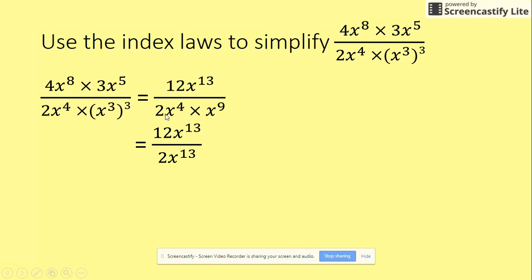We add our indices. We times our x's, so we've got 2x, 4 plus 9 gives us 13. Okay, so what we've done is we've worked out each line. Right, now we can actually look at the division part of it.